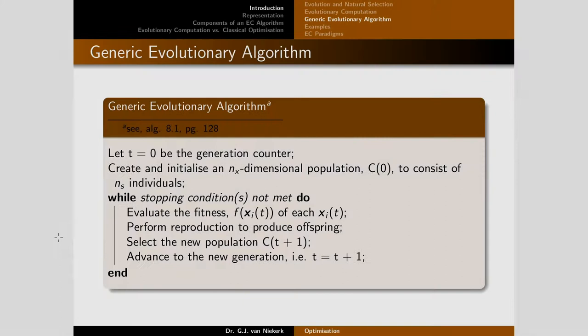The generic evolutionary algorithm is straightforward. We start by initializing the generation counter t at t equals 0, then we create an N-dimensional population. N refers to the number of variables you're trying to optimize — for example, a single polynomial gives a one-dimensional population, while a function of x and y gives a two-dimensional population.